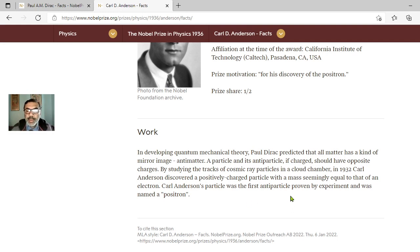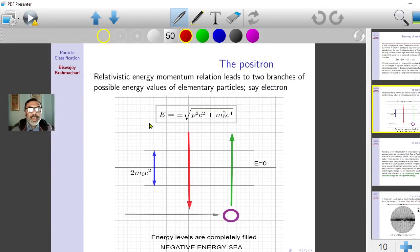Karl Anderson discovered a positively charged particle with a mass seemingly equal to that of an electron. Karl Anderson's particle was the first antiparticle proven by experiment and was named positron.